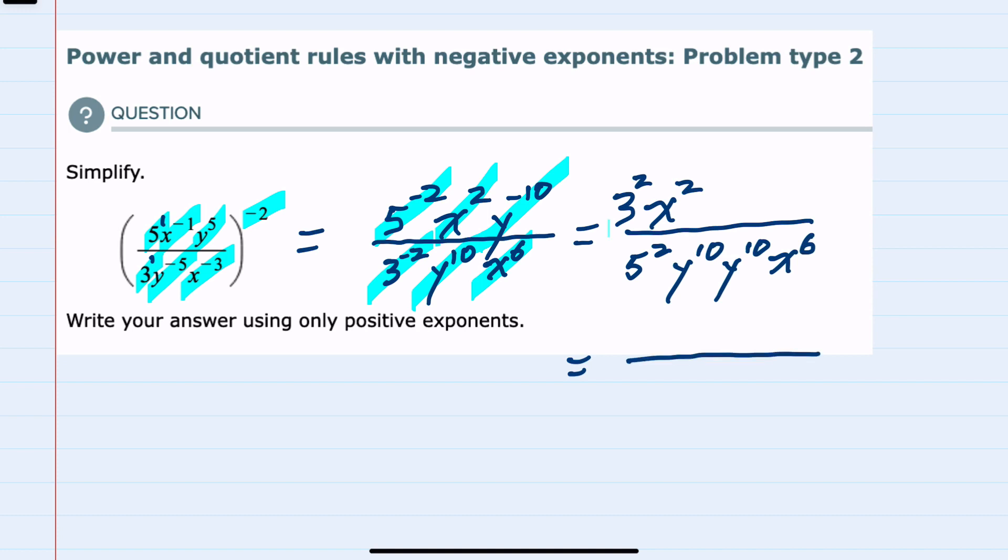I can continue to simplify. For the number coefficients, I can evaluate: 3 squared is 9 in the numerator, and 5 squared is 25 in the denominator.